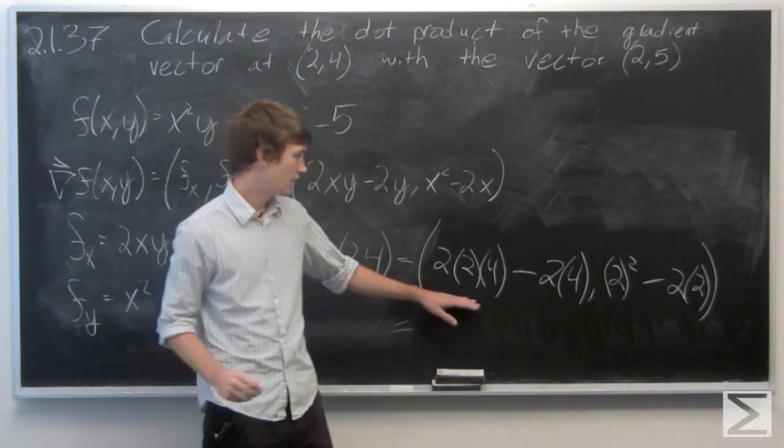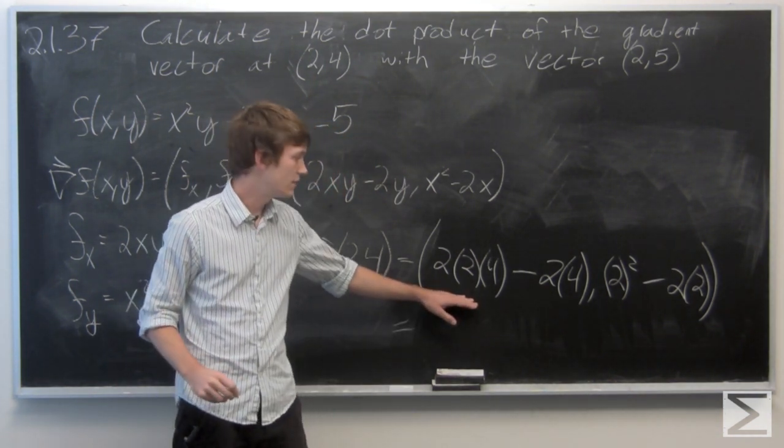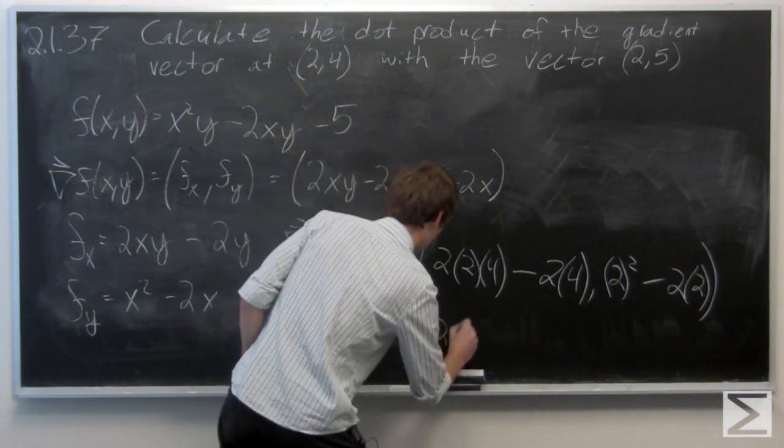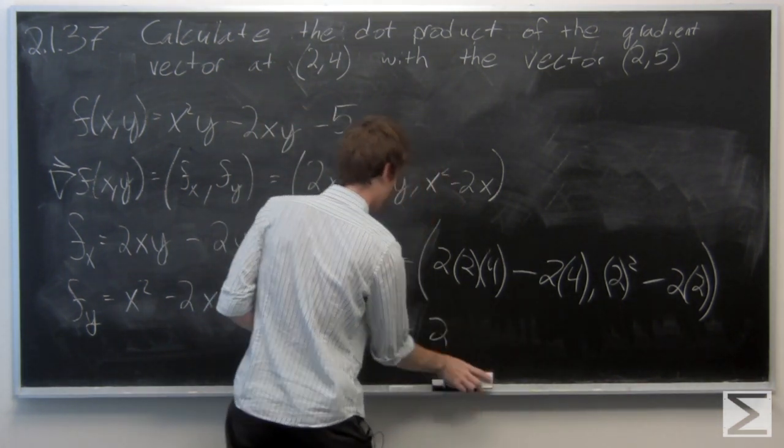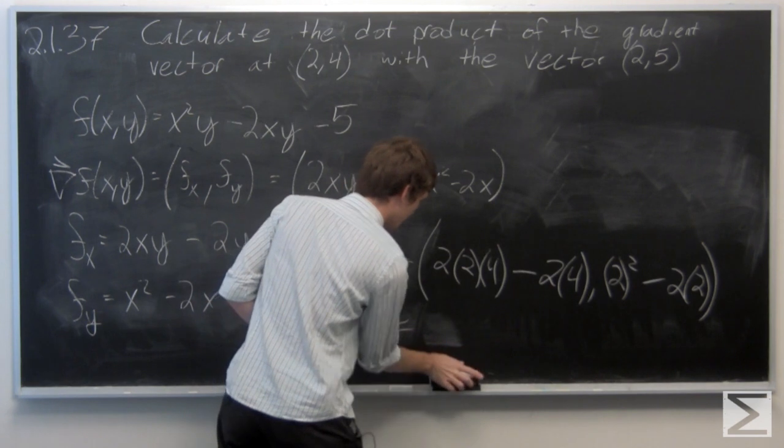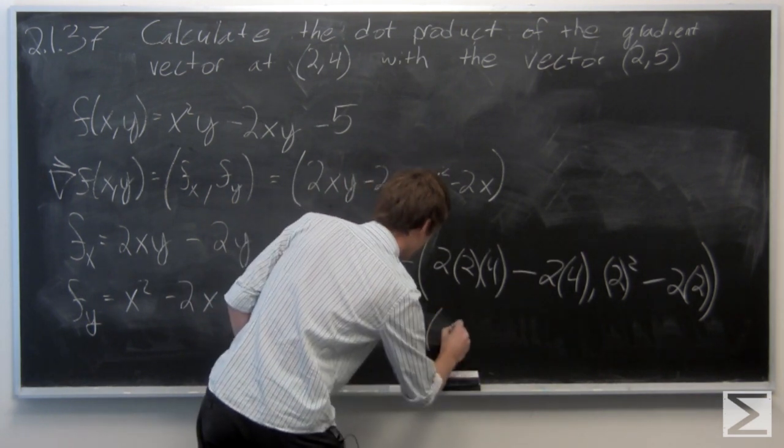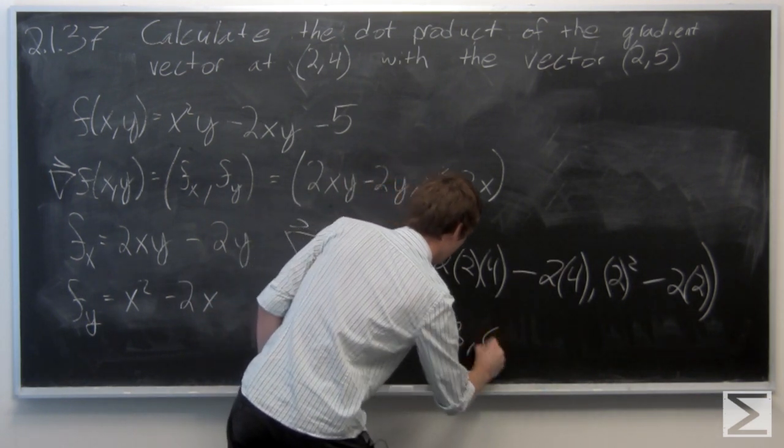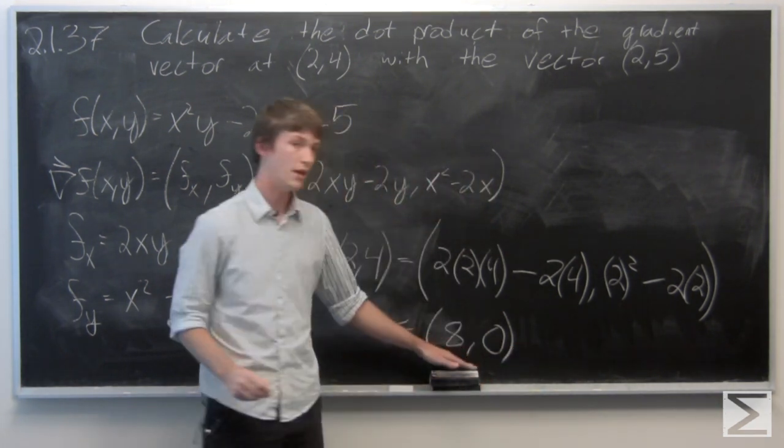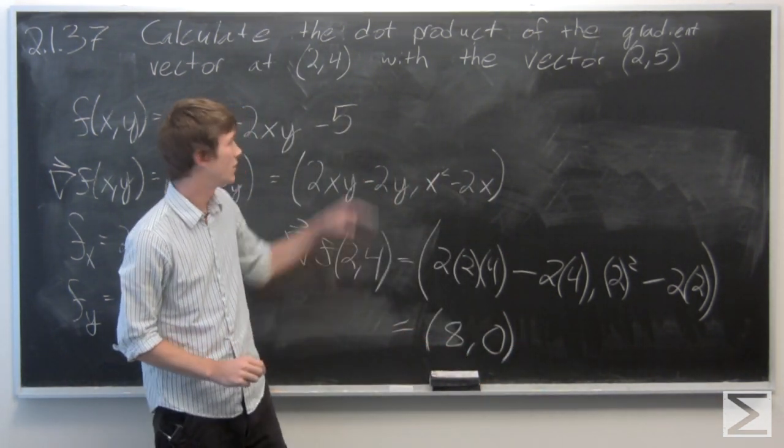And we find that the gradient vector is just 8 comma 0 at the point (2,4).